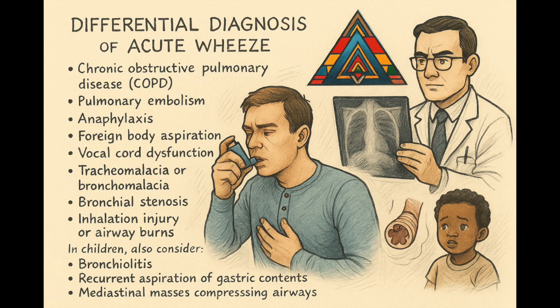Asthma must be distinguished from other causes of airway compromise. In adults, common mimics include chronic obstructive pulmonary disease, anaphylaxis, pulmonary embolism, and vocal cord dysfunction.